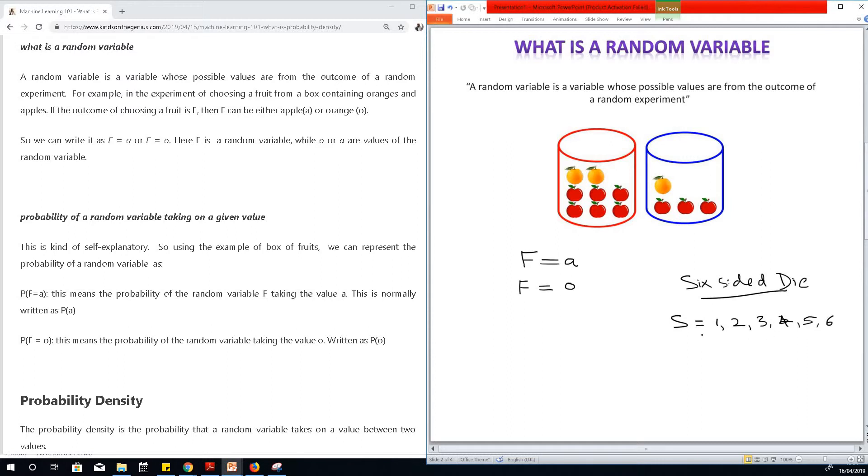s can never take a value of 7, it can never take a value of 8 or 9. So the value of s, which is our random variable, could only be 1 to 6. And 1 to 6 is the possible values of the outcome of the experiment of rolling a die.